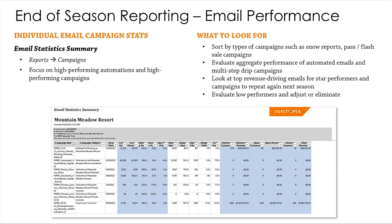The next report I like to look at after the campaign dashboard is a deeper dive into all emails over the course of the season: the email statistics summary report. You can find that under Reports and under Campaigns. This gives you all email campaigns and a detailed summary of all performance metrics for each campaign. I like to focus on high-performing campaigns and automations based on revenue. You can pull this report into Excel, add a filter tab to the header row, and sort campaign types by campaign name — grouping anything labeled as a program, automation, newsletter, snow report, or similar.